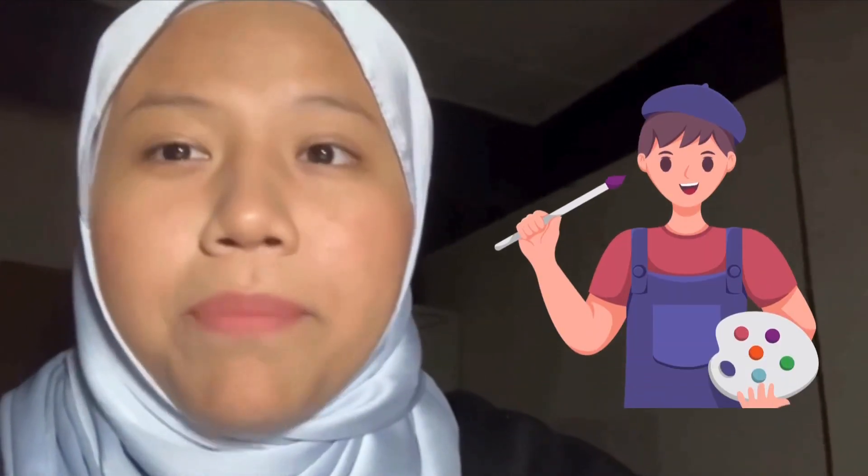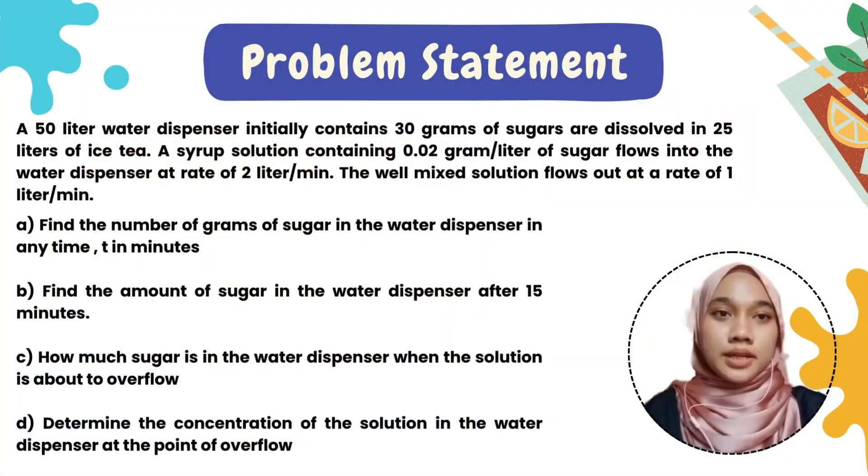The first example is when a driver needs to use two types of fuel to fill a tank for optimal car performance. The second is when a farmer needs to create fertilizer by blending different nutrients to meet a plant's nutritional needs. The last is when a painter needs to combine two colors to get a certain shade.